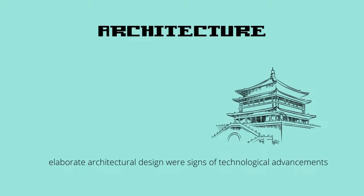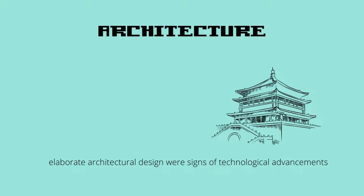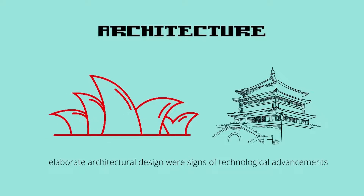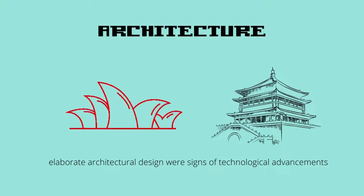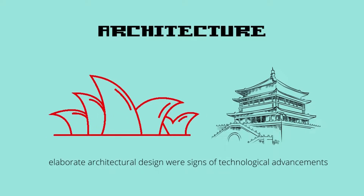The development in engineering also ushered in the introduction of architecture. Others might see architecture as a mere style, but during ancient times, elaborate architectural designs were signs of technological advancement of a particular civilization. In generations to come, architecture would be considered a status symbol showing how advanced a nation's technology is, and it may also establish the identity of a nation.